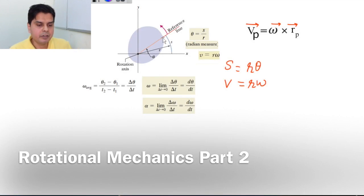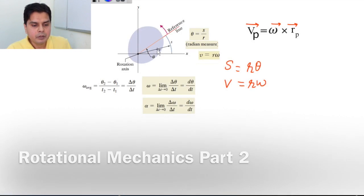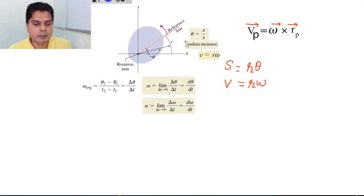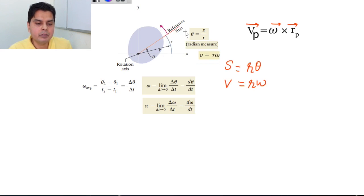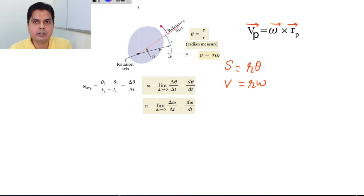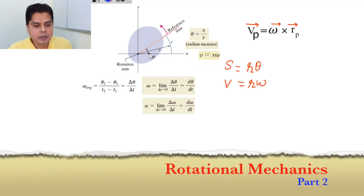Suppose we have been given an arbitrary rigid body which is rotating about the Z axis. To define the angular position theta, we take an X axis OX and draw an arbitrary reference line in the body. The angle which this reference line makes with the X axis is theta — this is the angular position. If we take theta in radians, then theta equals s divided by r.